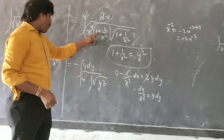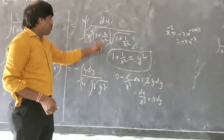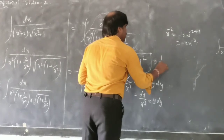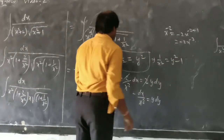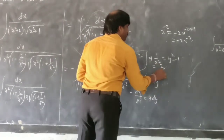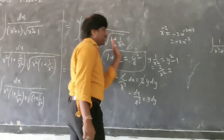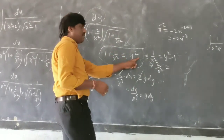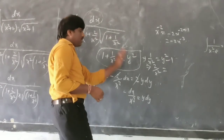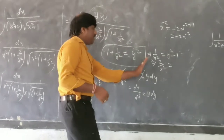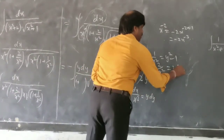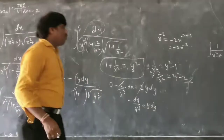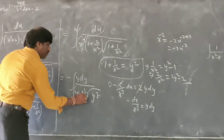So 1 upon x square I can write as y² − 1. If I write 2/x², it means I'm multiplying both sides by 2, so 2/x² = 2y² − 2. This whole thing: 2 upon x square can be written as 2y² − 2.